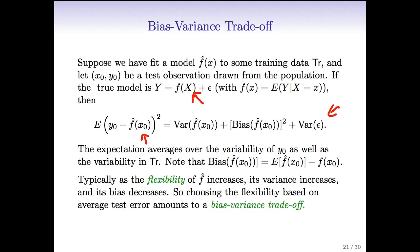Typically, as the flexibility of f̂ increases, its variance increases because it's going after the individual training set you've provided, which will be different from the next training set. But its bias decreases. So choosing the flexibility based on average test error amounts to what we call a bias-variance tradeoff.